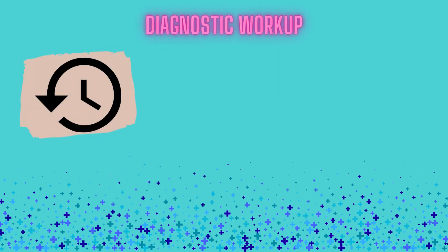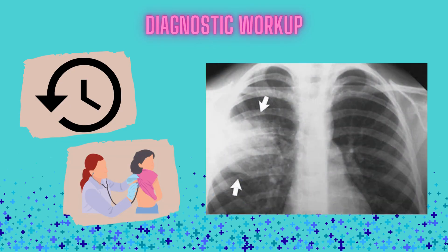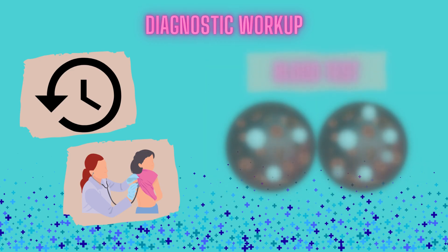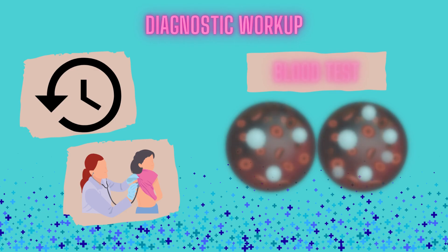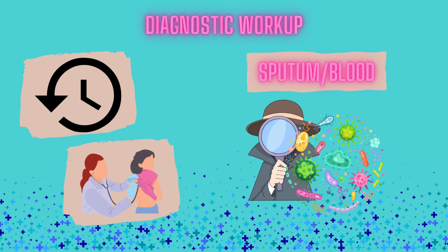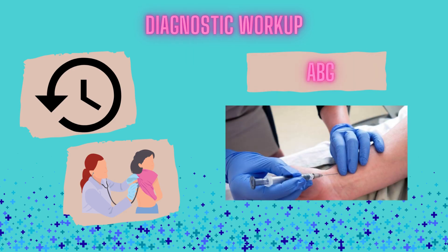Diagnosis starts with a good history and physical exam. Chest X-ray is crucial — it typically shows consolidation or infiltrates. Blood tests may reveal leukocytosis, while cultures of sputum or blood can help identify the pathogen. In severe cases, arterial blood gases may show hypoxemia.